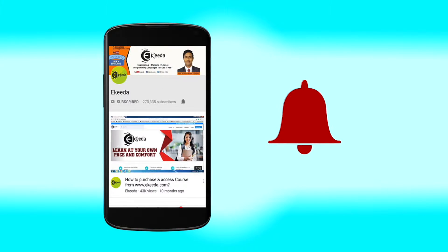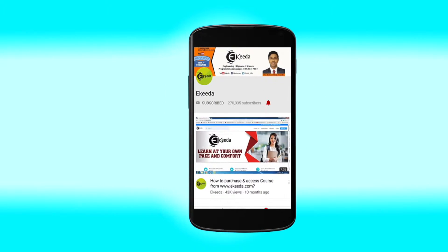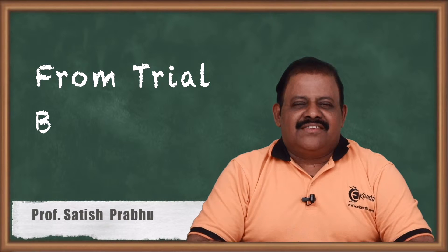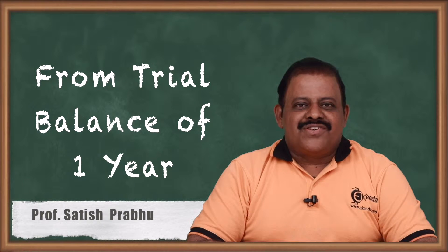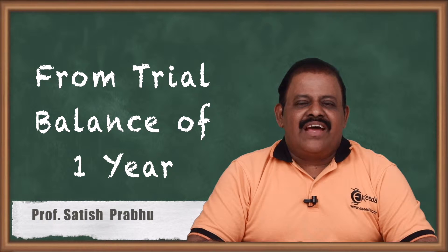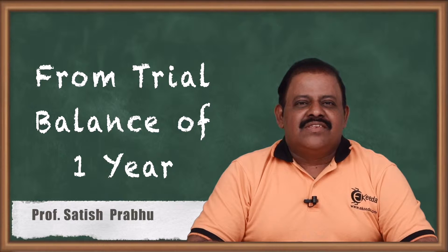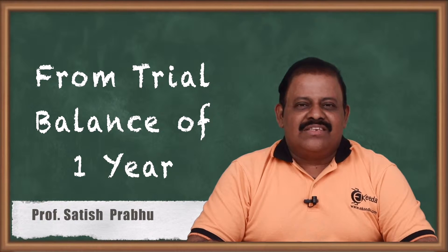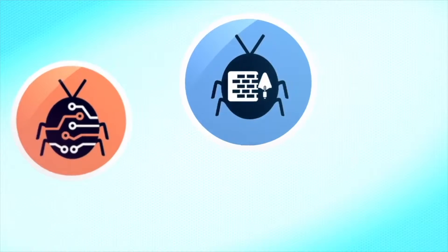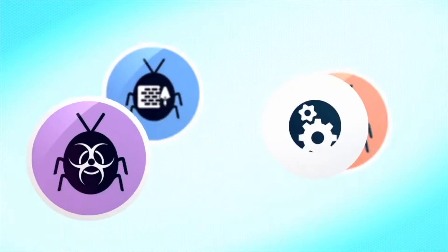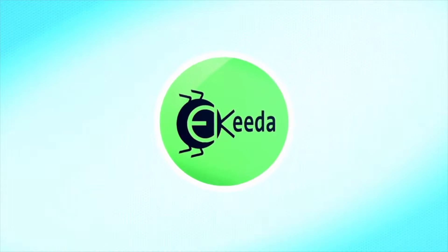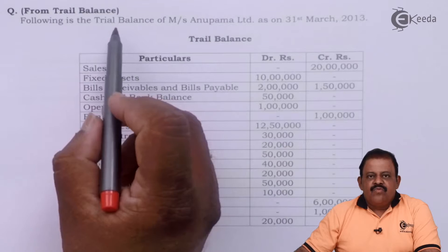Click the bell icon to get latest videos from Ikeda. Hello friends, we'll discuss one question of vertical income statement and balance sheet where we have given a trial balance and two adjustments. This was a question asked at a university examination — let us understand how to solve this.